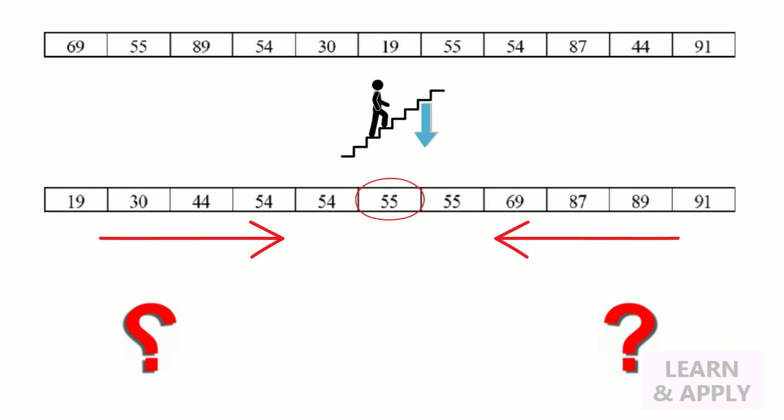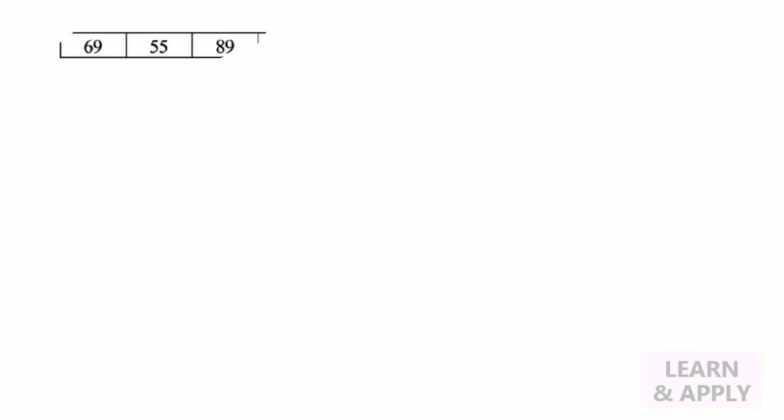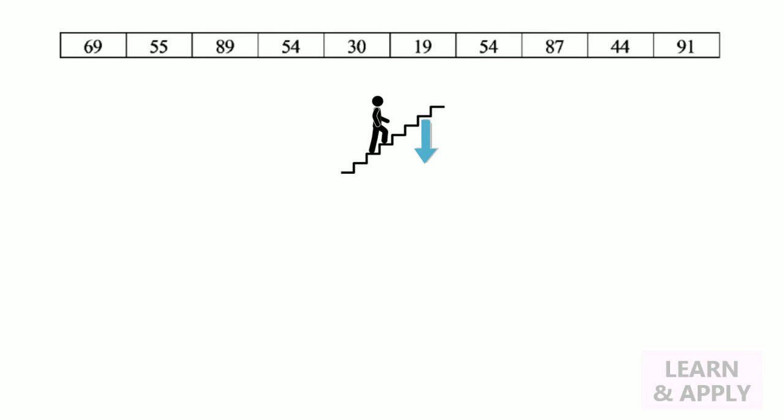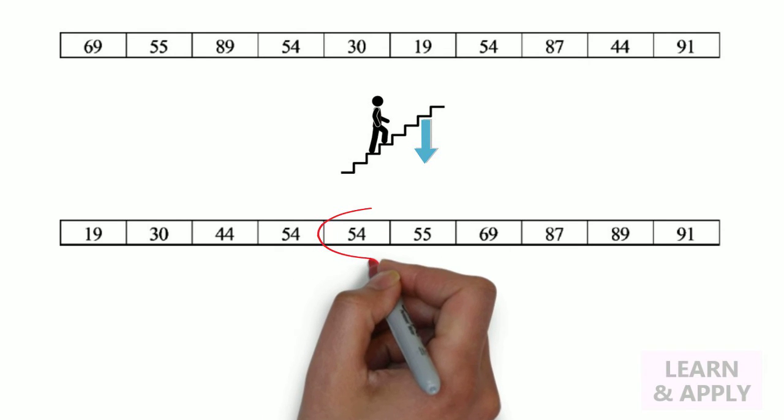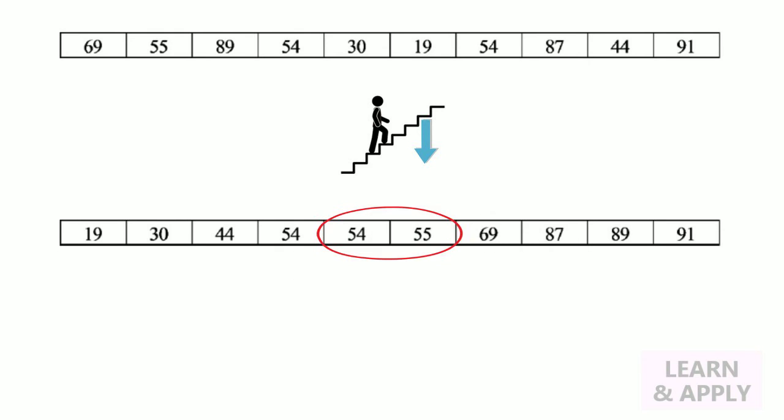The question comes when, what to do in case of even number of data points. Let's consider the same example after removing one of the data point. In this case, first step will be the same. That is, arrange the data point based on their magnitude. But in next step, we simply have to take the middle two scores and average the result. In this case, it would be the average of 54 and 55. That is, 54.5.